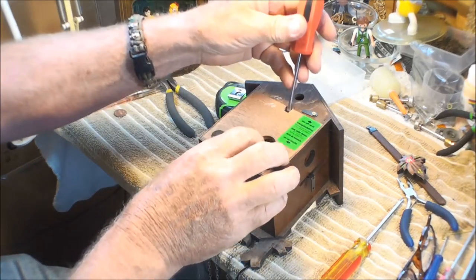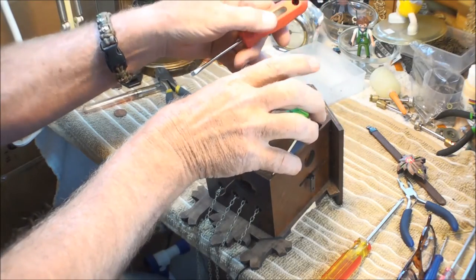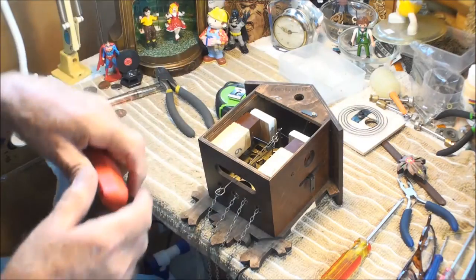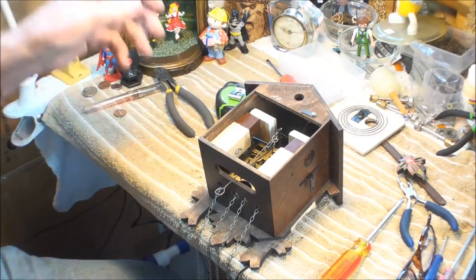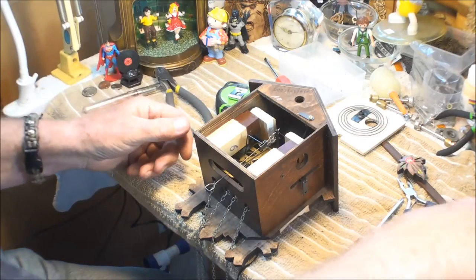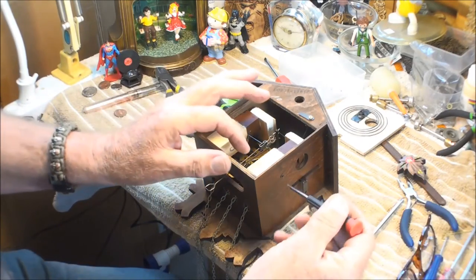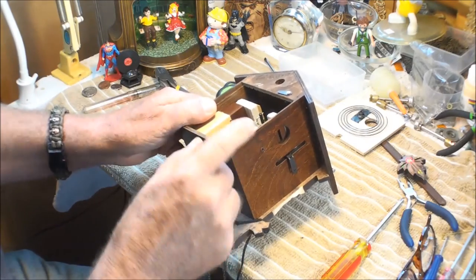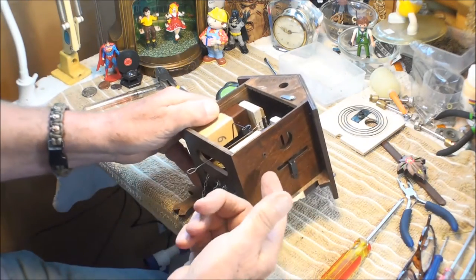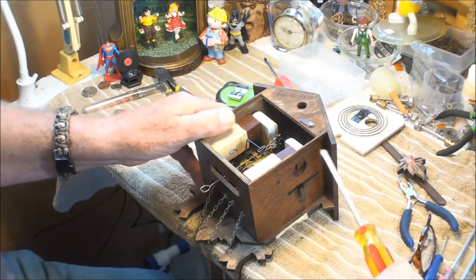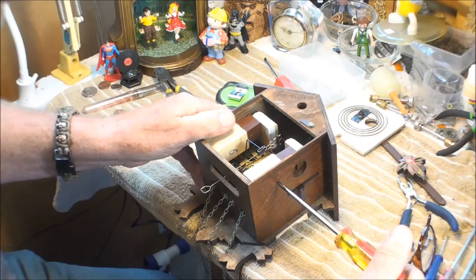Also on this clock, she mentioned that she was going to take this thing apart, and when she tried to take these bellows out, she said that they were glued in, which I will admit I hate that when they glue them in. I see really no reason for it.